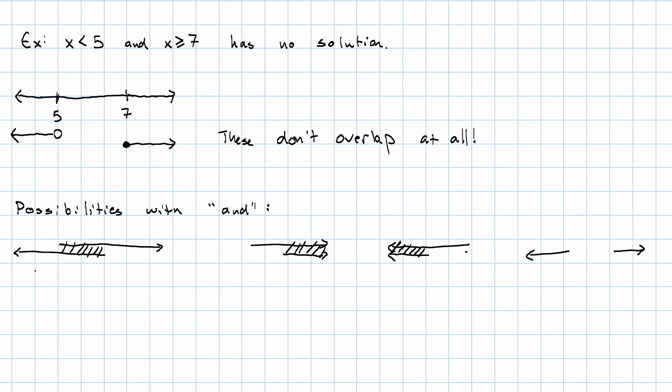In this situation, we need both inequalities. In these two situations, we need only the more restrictive inequality, only the one that gives the shorter ray. And in this situation, we have no solution because there are not any numbers where both inequalities are true.